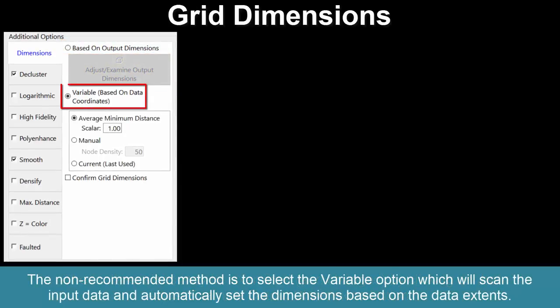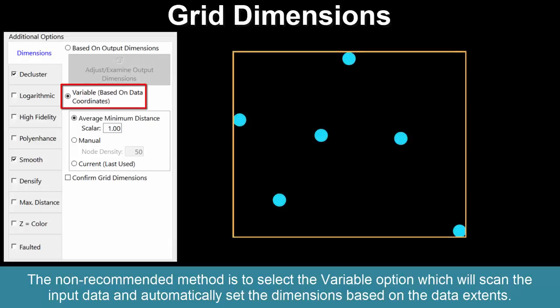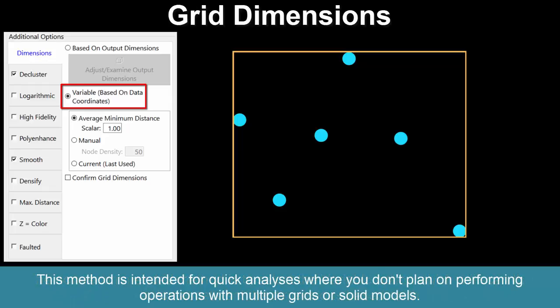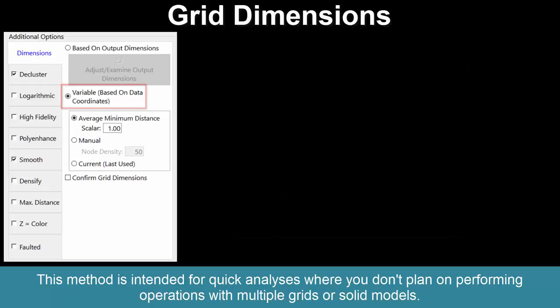The non-recommended method is to select the Variable option, which will scan the input data and automatically set the dimensions based on the data extents. This method is intended for quick analyses when you don't plan on performing operations with multiple grids or solid models.